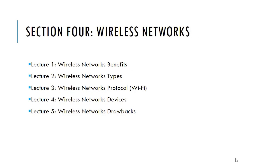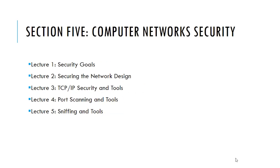Section 4 shows the wireless network's benefits and why we go wireless sometimes. Lecture 2 shows the wireless network types. Lecture 3 shows the wireless network protocol, the famous protocol of Wi-Fi. Lecture 4 shows the wireless network devices and mainly the access point, its features, and how it is embedded inside the wired infrastructure. Lecture 5 shows the drawbacks and disadvantages of going wireless inside the network.